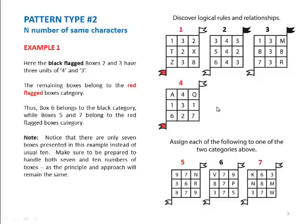The red flagged boxes, on the other hand, do not display any obvious patterns so they should belong to the other category. When we look at the answer choices in the lower section where you see 3 boxes, 5, 6 and 7, we see that boxes 5 and 7 do not display any obvious features that the black boxes here do. Whereas box 6 has 3 units of number 7, therefore it must belong to the black flagged boxes category.